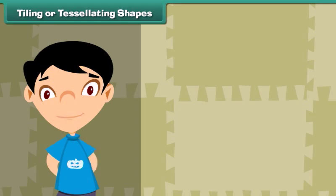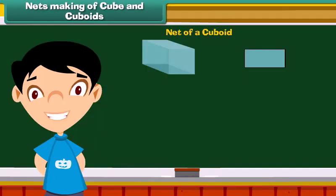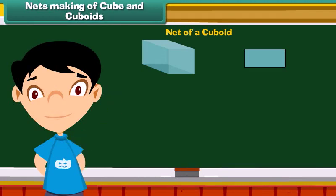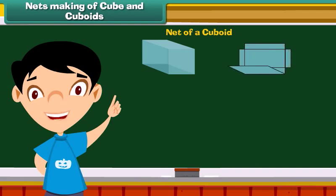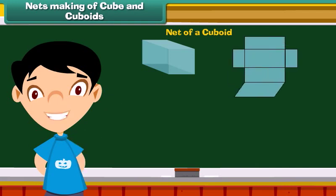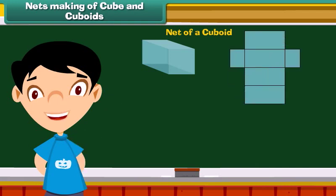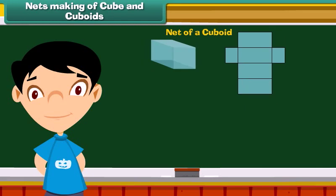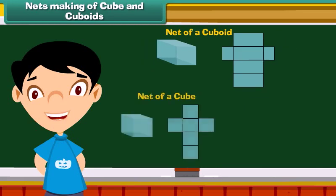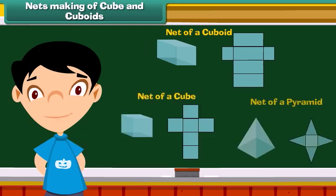A net of a 3D shape is an arrangement which, when folded along the common edges, forms the 3D object. Here are some nets of a cube and cuboids.